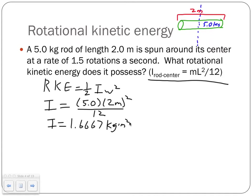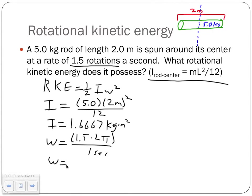Next we need omega in radians per second. The rod does 1.5 rotations per second, and one rotation equals 2π radians, so omega = 1.5 × 2π = 9.42478 radians per second.